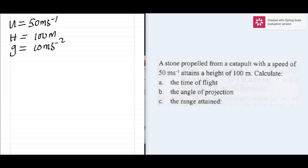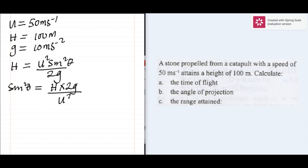The expression for the maximum height H is equal to u squared sine squared theta all over 2g. Making sine square theta the subject of formula, we will have H multiplied with 2g all over u square.